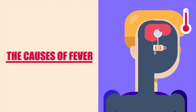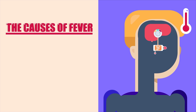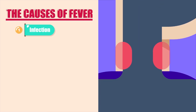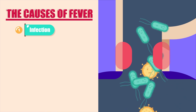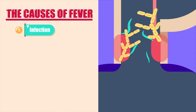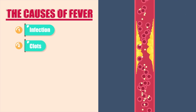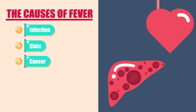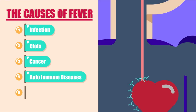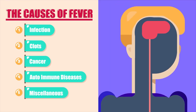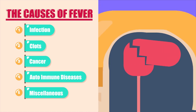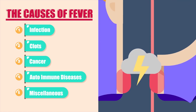The causes of fever can be divided into five broad categories: 1. Infections, which is the most common cause of pyrexia, and can include bacterial, viral, fungal, or parasitic infections. 2. Clots. 3. Cancers. 4. Autoimmune diseases. 5. Miscellaneous, which can include things like heat stroke, medications, brain lesions, and thyroid storm, to name a few.